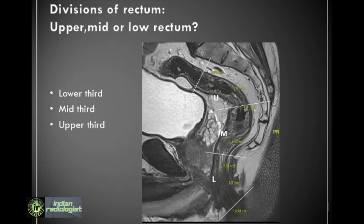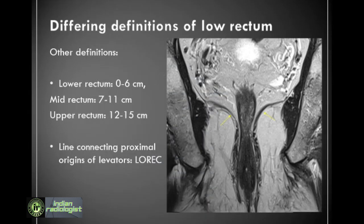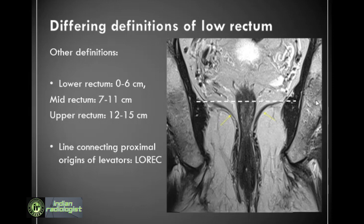Axial MR images should be taken perpendicular to the changing long axis of rectum. The lower rectum is sometimes separately defined as surgical management of low rectal cancers differs from that of mid and high rectal cancers. Some radiologists define the low rectum as 6 cm or less from the anal verge, mid rectum as 7 to 11 cm, and upper rectum as 12 to 15 cm. Another way of defining low rectum is to draw a line connecting the proximal origins of the levators at the pelvic side wall in coronal T2-weighted MRI. The part of the rectum distal to this line may be defined as low rectal cancer, a definition provided by LOREC, the English national low rectal cancer development program.